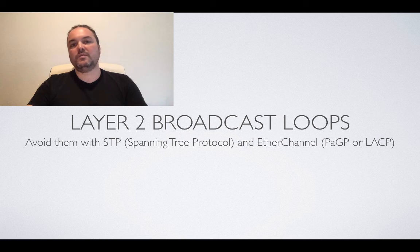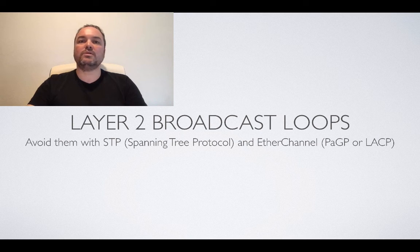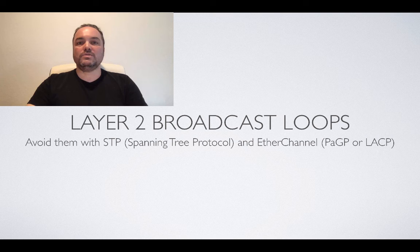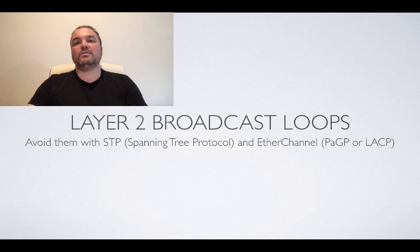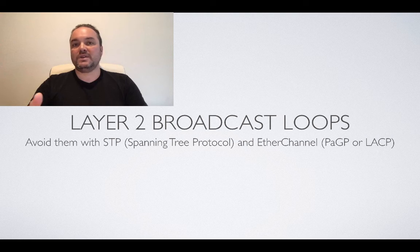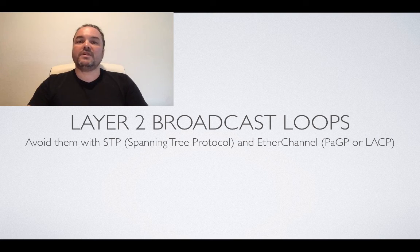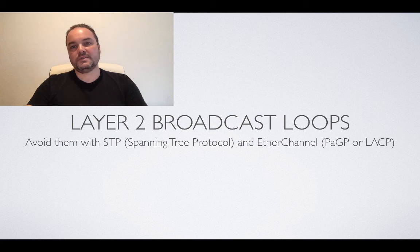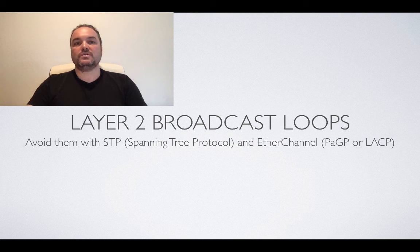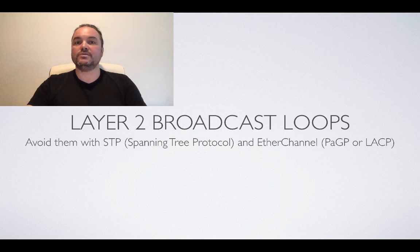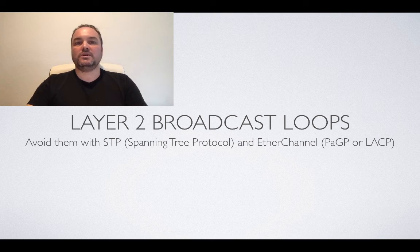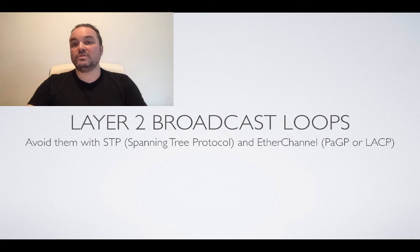For example, when you have a cable that is unplugged by mistake or a cable that breaks, you want to be able to maintain connectivity on the remaining link. And you can only do that if you have more than one link. However, this amplifies the risk to have frames that bounce back and forth forever between the switches due to layer 2 loops. In this video, I'm going to show how layer 2 loops occur and what to do about it.